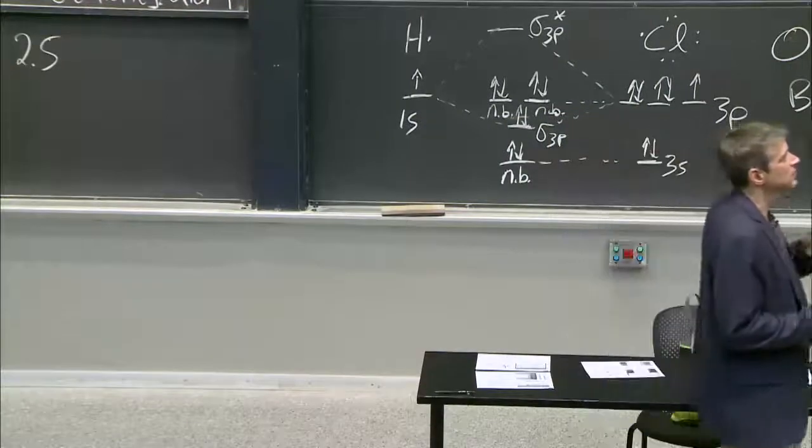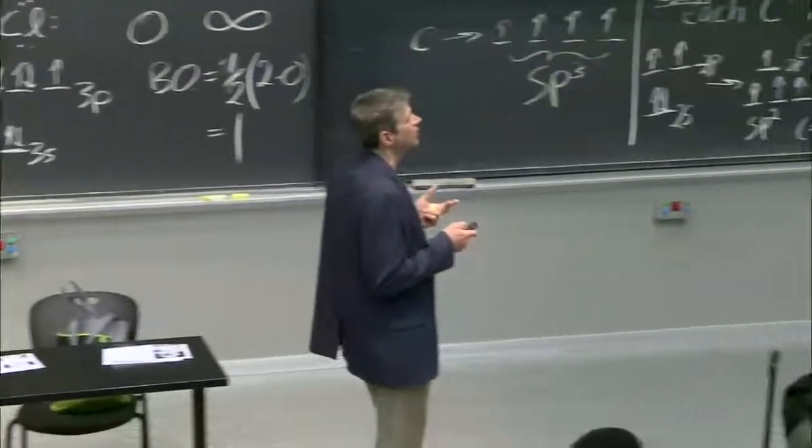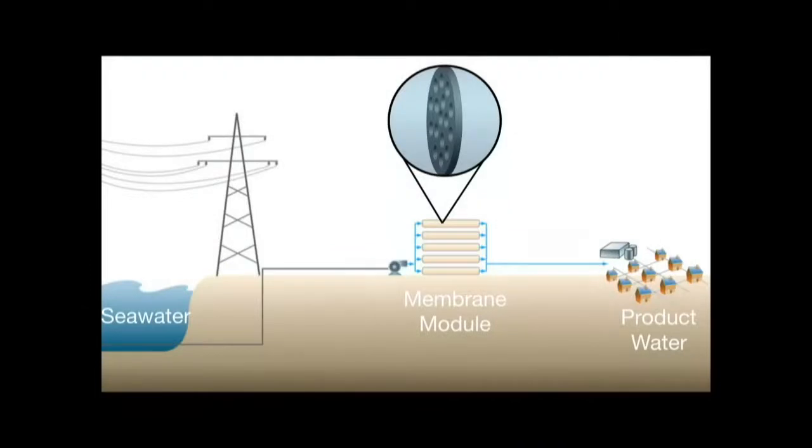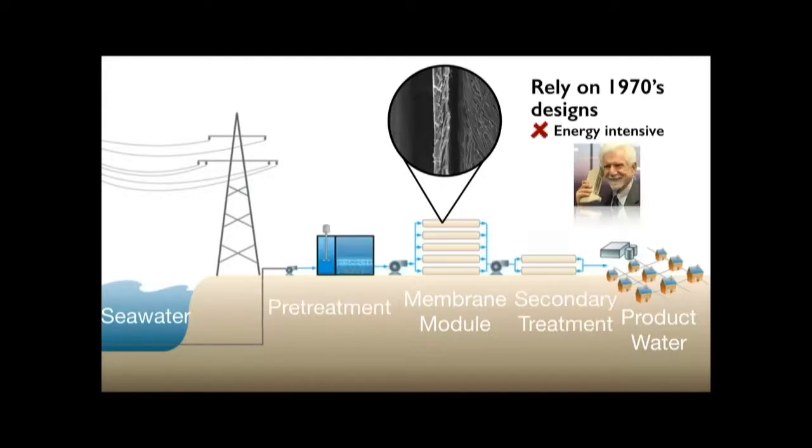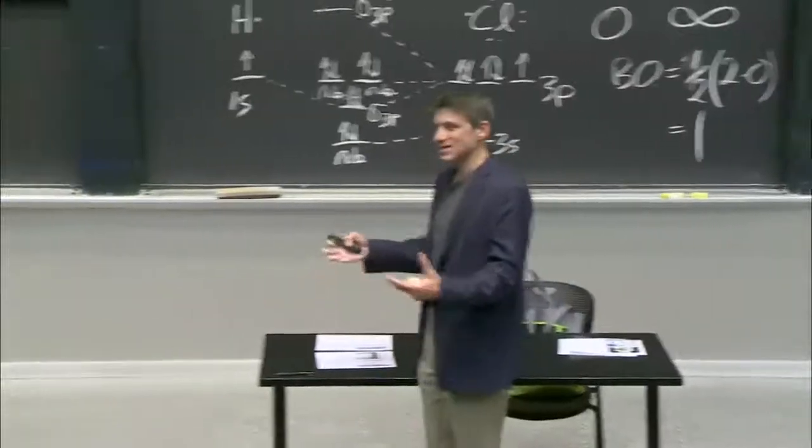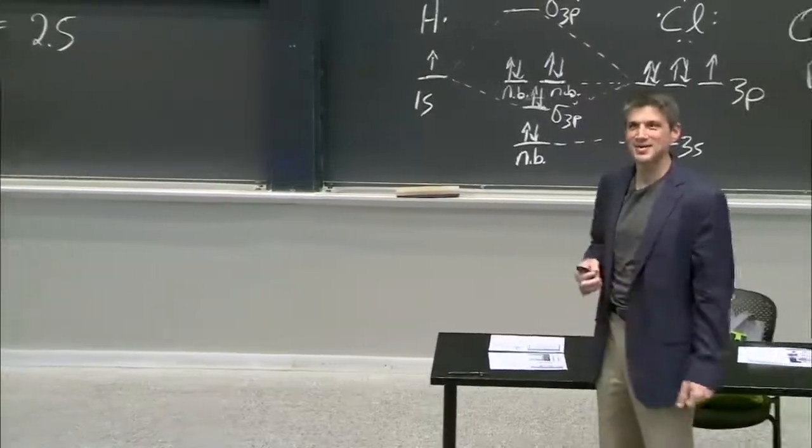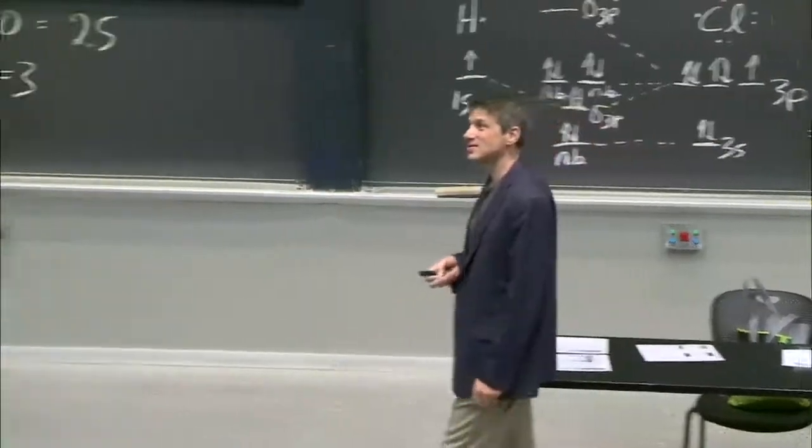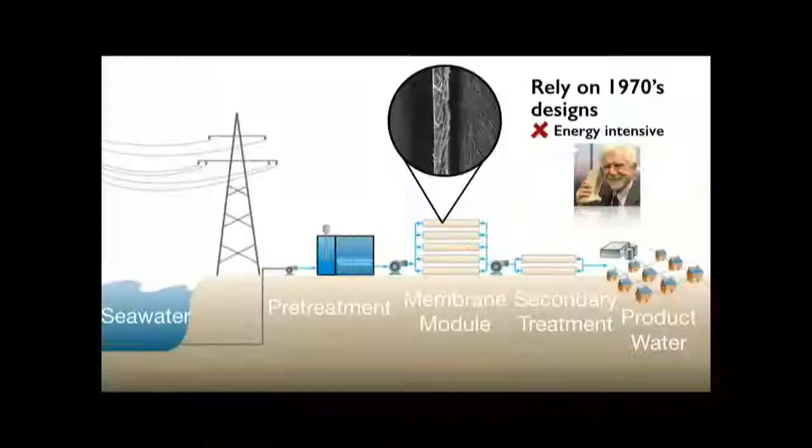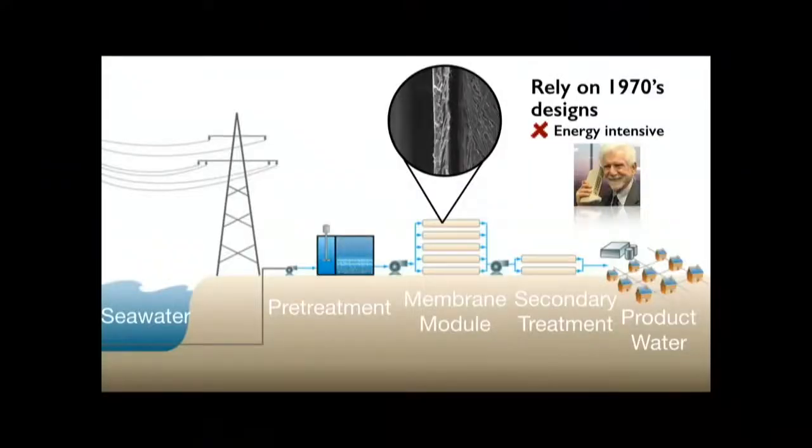Now, this would be like a plant. You have seawater coming in, and then you've got your membrane module that's taking the salt out of the water, and then the product water. But because this filter is so delicate, you actually have to add a whole lot more to the plant. So much of a desal plant is built around essentially protecting this membrane. So that's cost. A better membrane could change this.